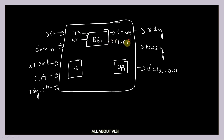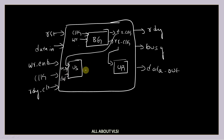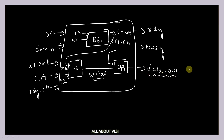The BG outputs txclock and rxclock. The txclock signal is given to the UART sender, and the rxclock signal is given to the UART receiver. The UART sender also takes write enable and data_in signals. For the UART sender we provide parallel data and get serial data out, and that serial data is parallelized by the UART receiver and sent to data_out.